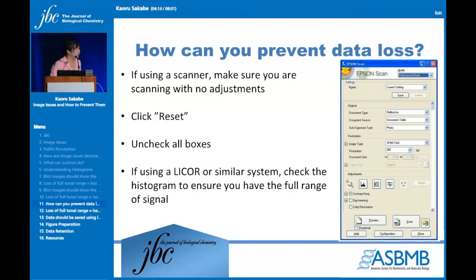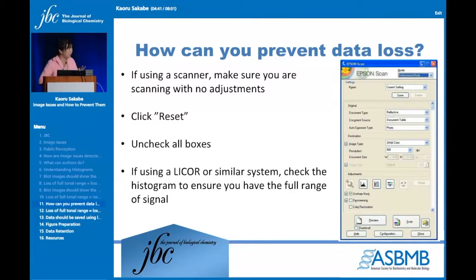A lot of you are still using flatbed scanners. In your interface when you set your film down, first you want to make sure you're scanning at 300 DPI, which is the standard resolution for publication. There are boxes in the interface telling the scanner how to pick what are the completely white pixels and what are the completely black pixels — but you don't want the scanner to do that for you. So make sure you click reset and uncheck any of those boxes. That ensures you're getting a real capture of what's on that film.